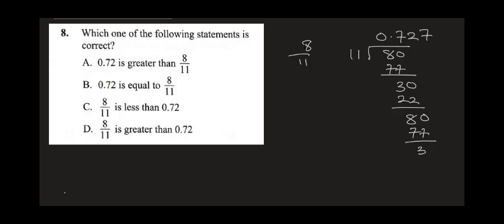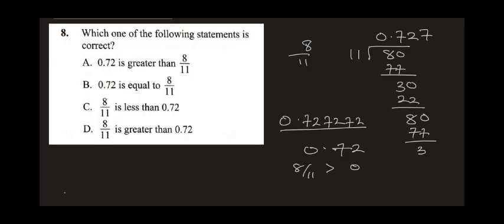So 8 over 11 gives 0.727272... and so on. Now compare this to 0.72 — you will notice that 8 over 11 is greater than 0.72. So the correct answer is D.